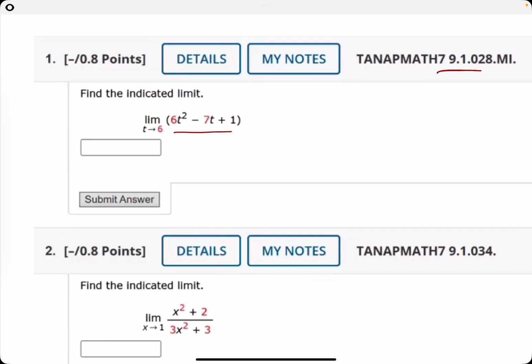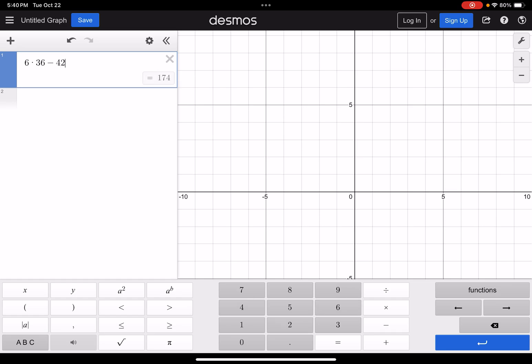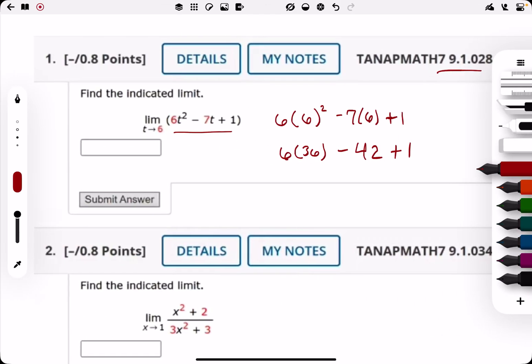The limit of this function as t approaches 6. The approach here is to use direct substitution. Plug in 6 wherever you see t, so 6 times 6 squared minus 7 times 6 plus 1. That's 6 times 36, which is 216, then minus 7 times 6, which is 42, plus 1. Using a calculator, 6 times 36 minus 42 plus 1 equals 175. That's our limit value.